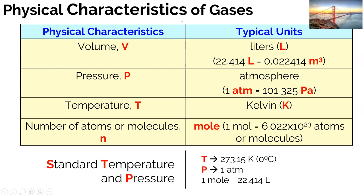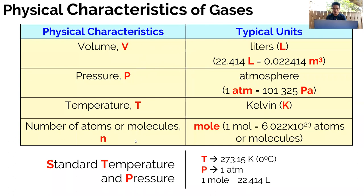These are the properties and characteristics of ideal gases. The four quantities we will describe are volume, pressure, temperature, and number of molecules. When we talk about ideal gases, we describe the relationships of these variables — the relationship between volume and pressure, volume and temperature, volume and number of molecules, and pressure and temperature.